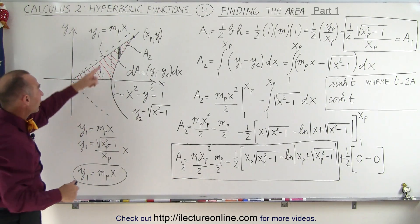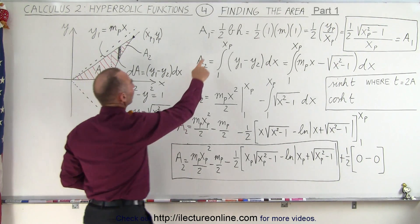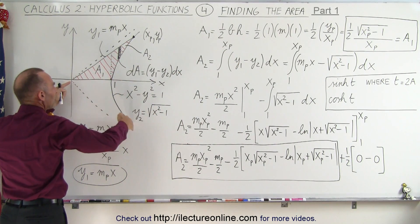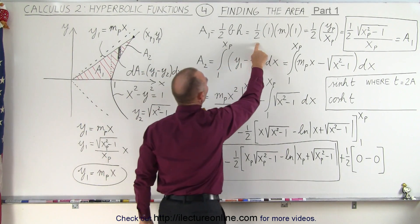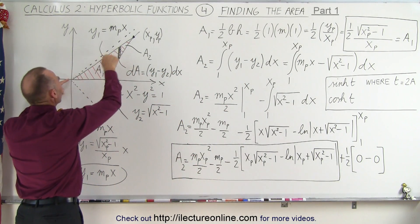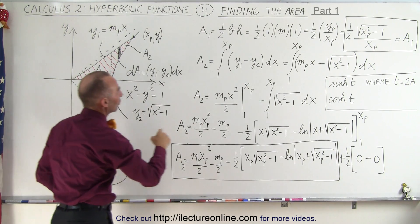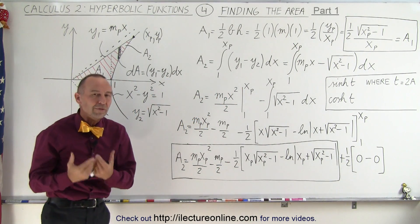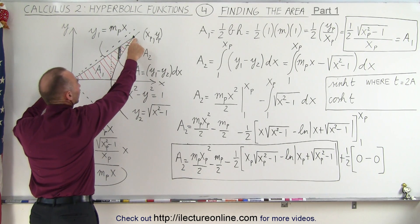To find area 1, we simply find the area of a triangle, which means it's half the base times the height. The base here is equal to 1, because that's where the hyperbolic function crosses the x-axis at x equals 1. So it's one half times 1 times the height, and the height can be determined by the slope of this line multiplied by the distance to that point. The run is equal to 1 and the slope is going to be equal to m.